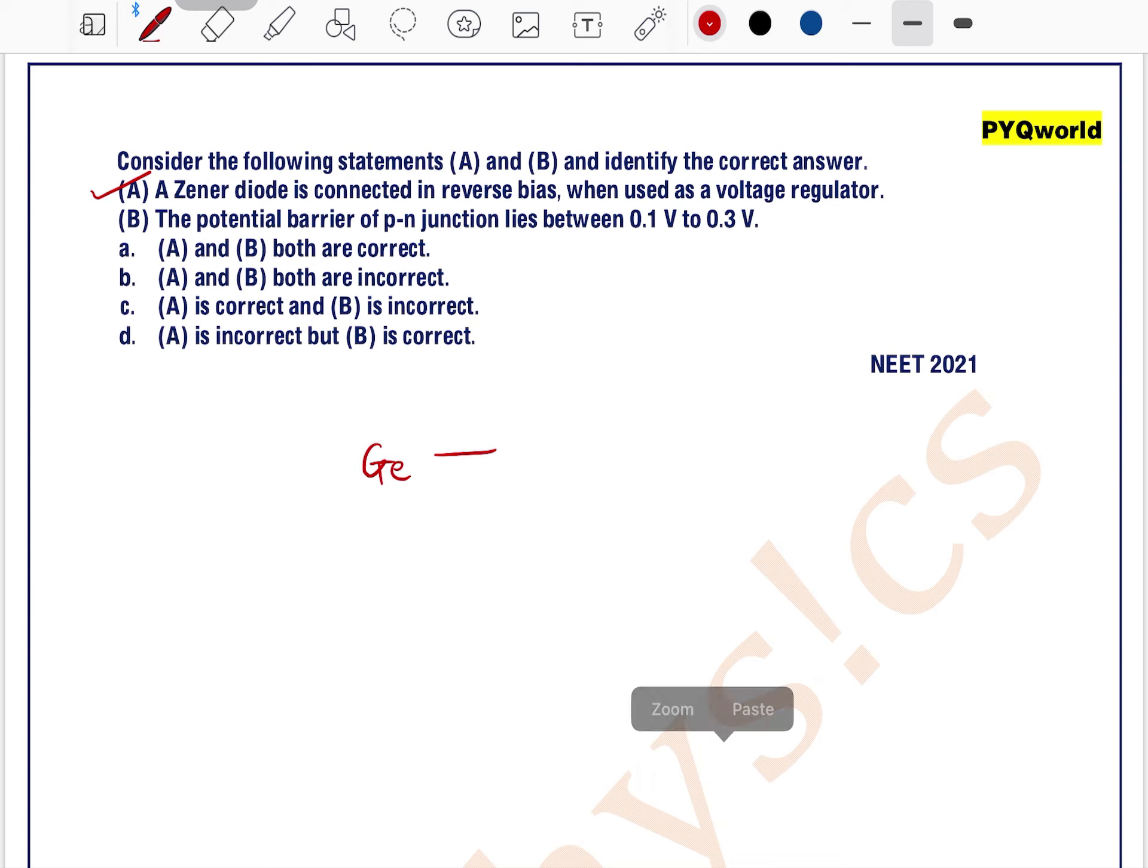Because we know that for a germanium diode, the knee voltage or barrier potential is 0.3V, and for silicon it is equal to 1.1V. Now it is saying that it lies between 0.1V to 0.3V.